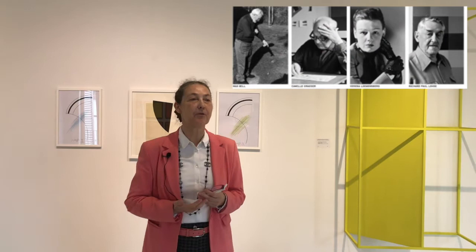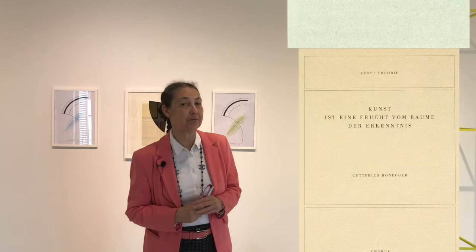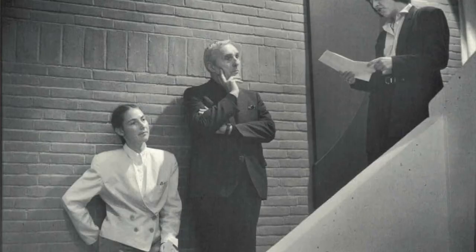Gottfried Honecker ist einer der Zürcher Konkreten, Jahrgang 1917, also etwas jünger als Max Bill, aber doch in diesem Geiste groß geworden. Er arbeitet sehr streng und geometrisch; seine wichtigsten Formen sind Circle e Carré, also Kreisform und rechter Winkel. Aber er schreibt auch sehr romantisch, und in diesem Zusammenhang haben wir eine ganze Reihe Bücher zusammen herausgegeben. 1989 zeigte ich die erste Arbeit von ihm, verliebte mich mehr und mehr in das Werk und machte gleich 1990 eine erste Einzelausstellung in Bretzenheim.